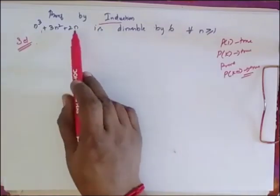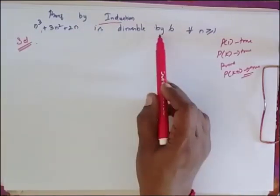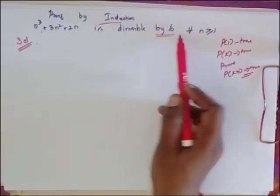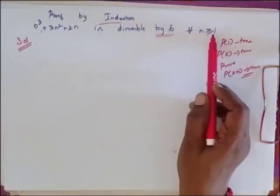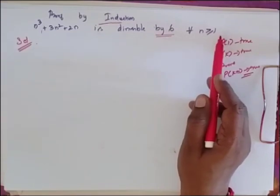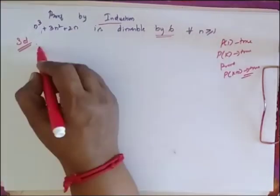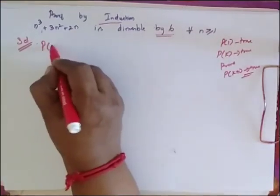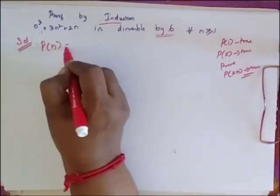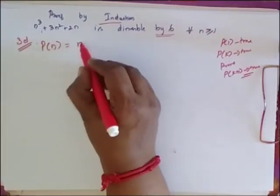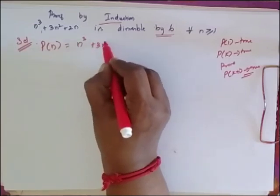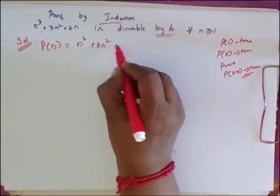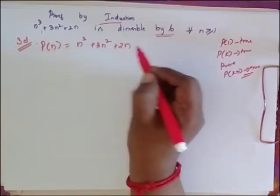Now we have the problem: n³ + 3n² + 2n is divisible by 6 for every n greater than or equal to 1. I consider my P(n) as n³ + 3n² + 2n.